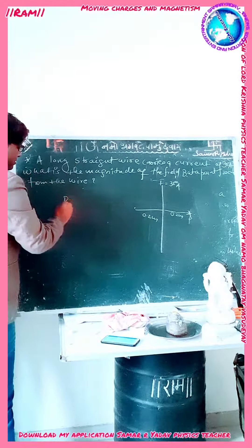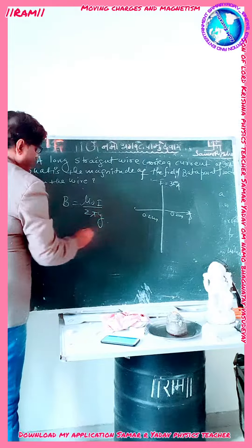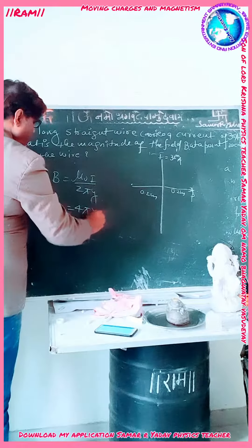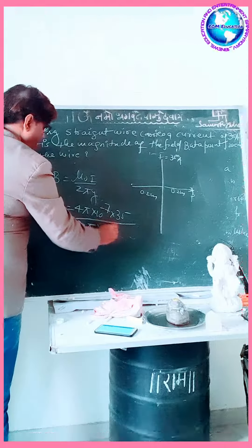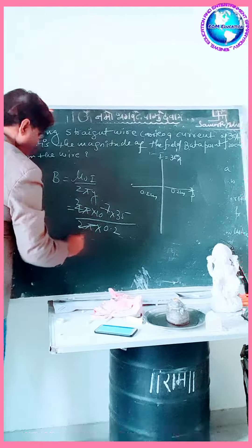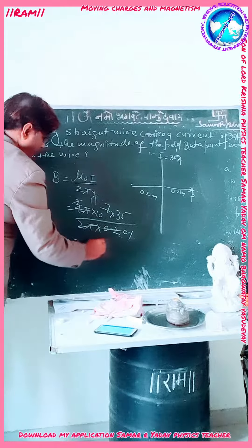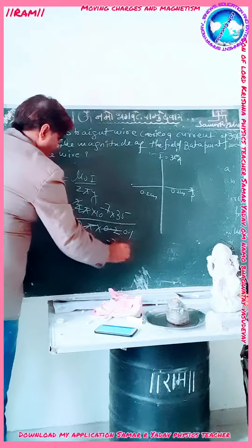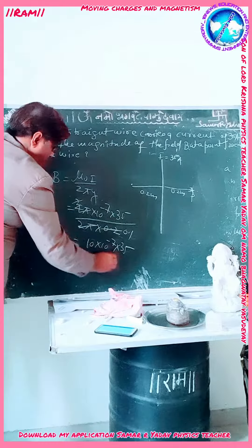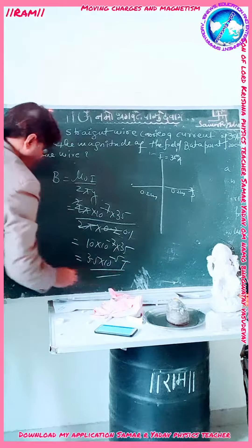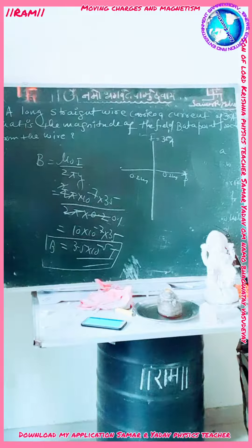The field formula is B equal to mu-0 I upon 2 pi r. That is 4 pi into 10 to the power minus 7, multiplied by I = 35, divided by 2 pi into 0.2. The 2 pi cancels, giving 0.1, so B equals 10 into 10 to the power minus 7 into 35. The direction of the field can be obtained using the right-hand rule.